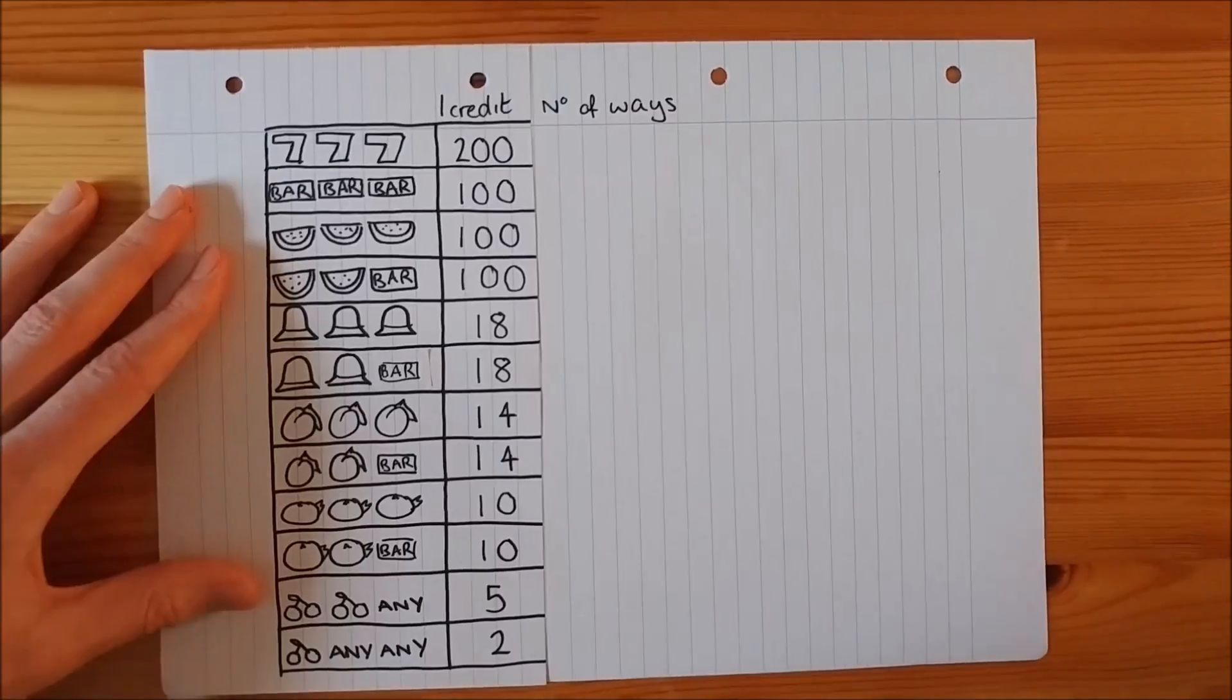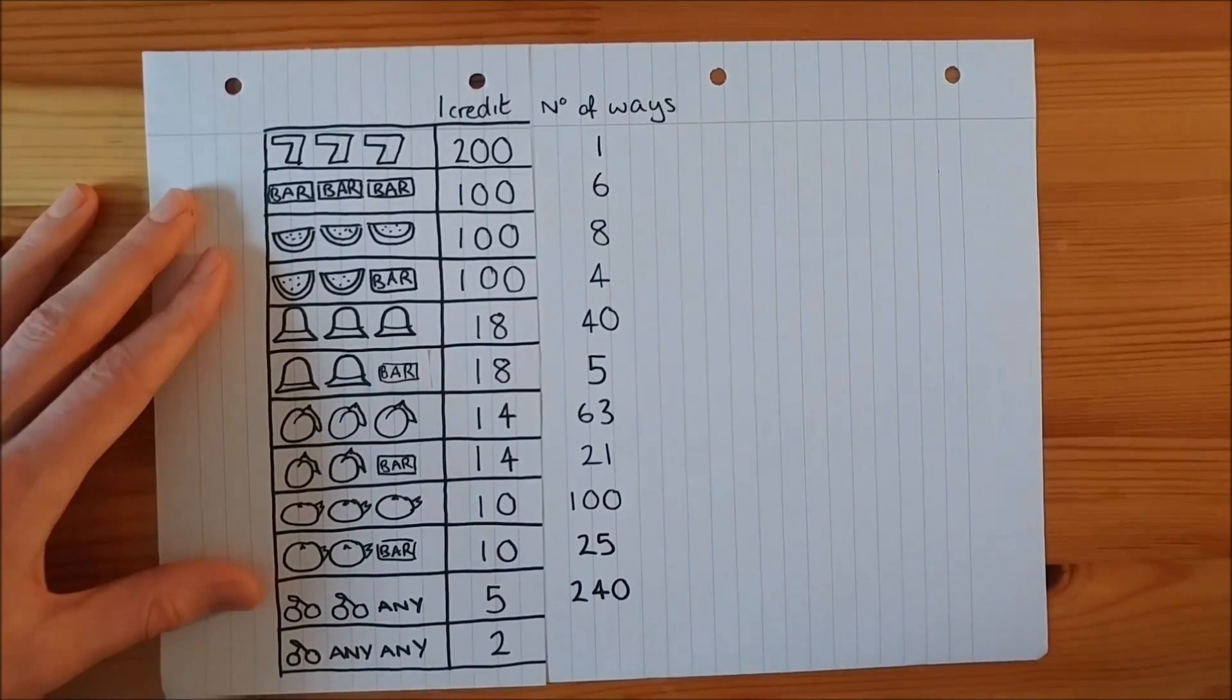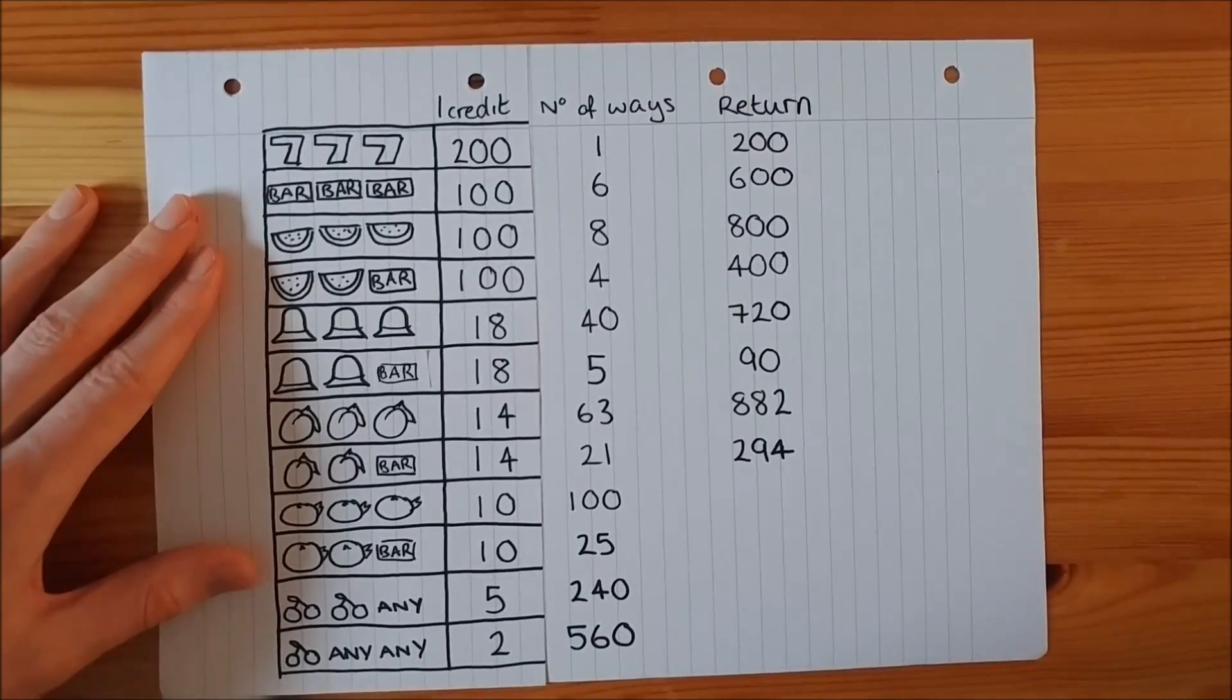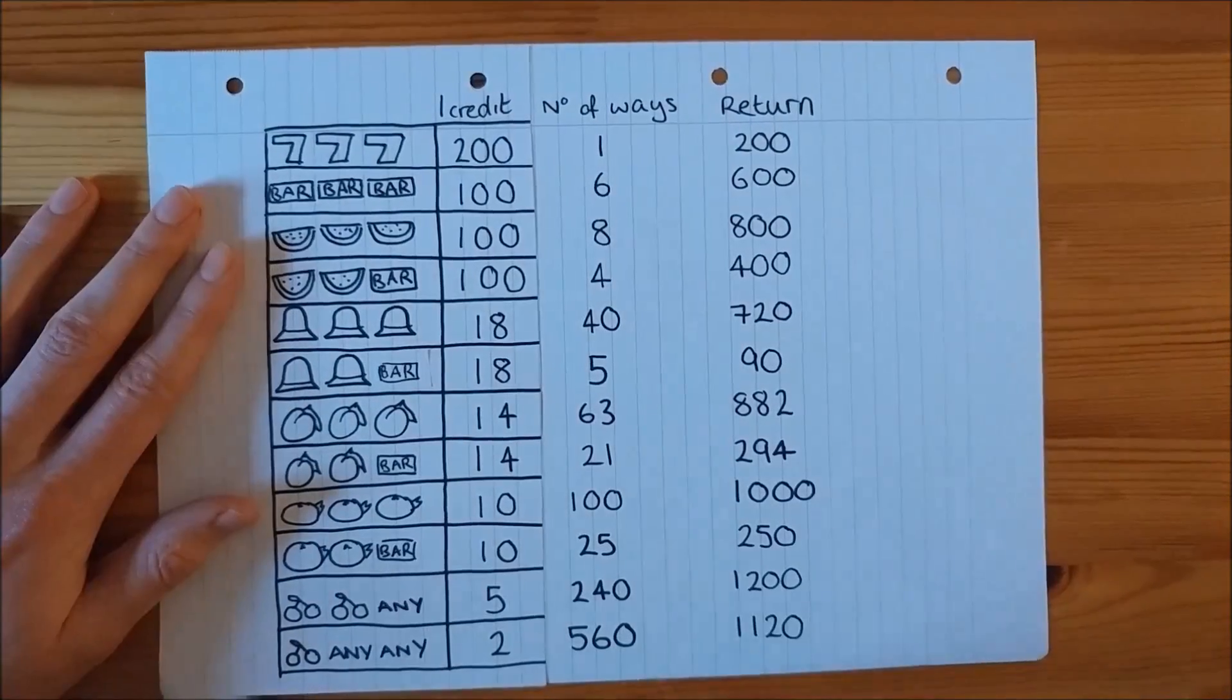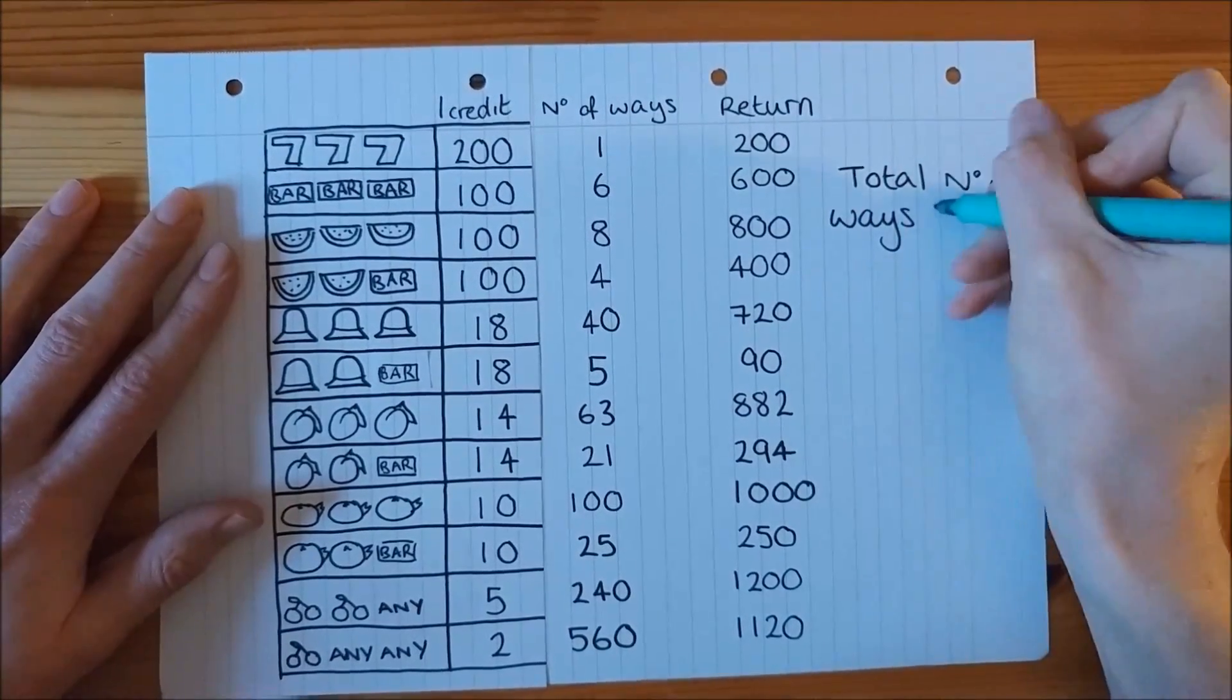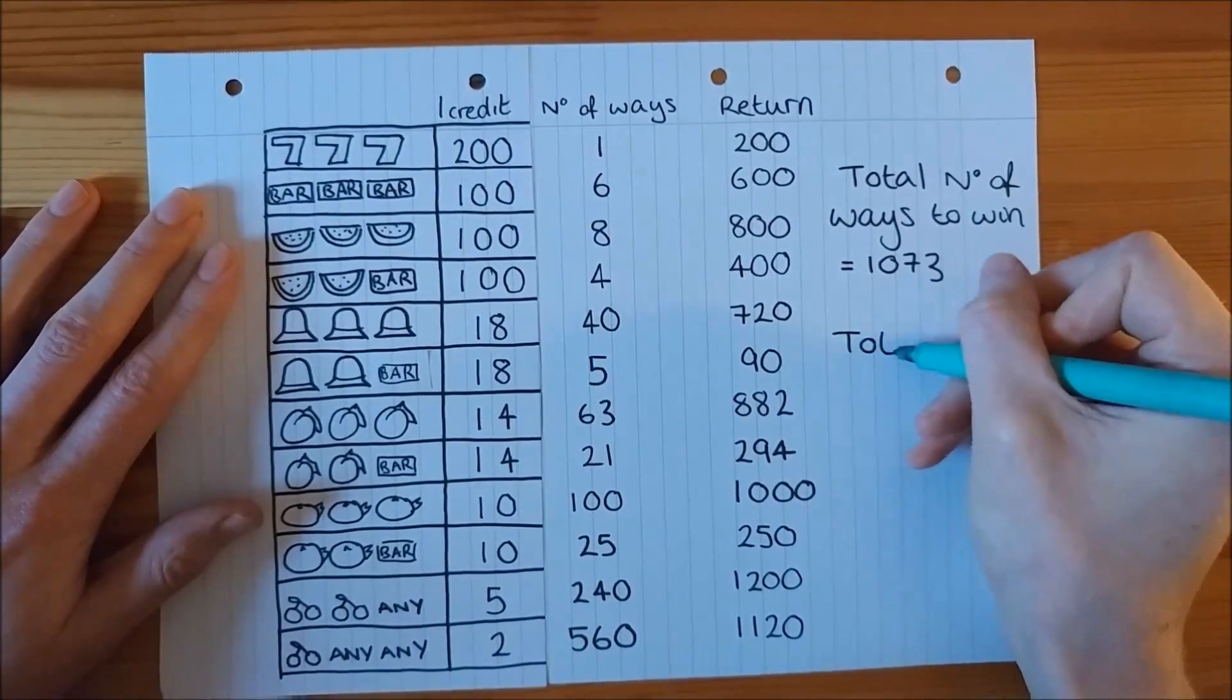Doing this for each winning combination, we get the following results. By multiplying the payout by the number of combinations, we get the overall return. From this, we can see that the total number of ways to win is equal to 1,073, and the total return is 7,556.